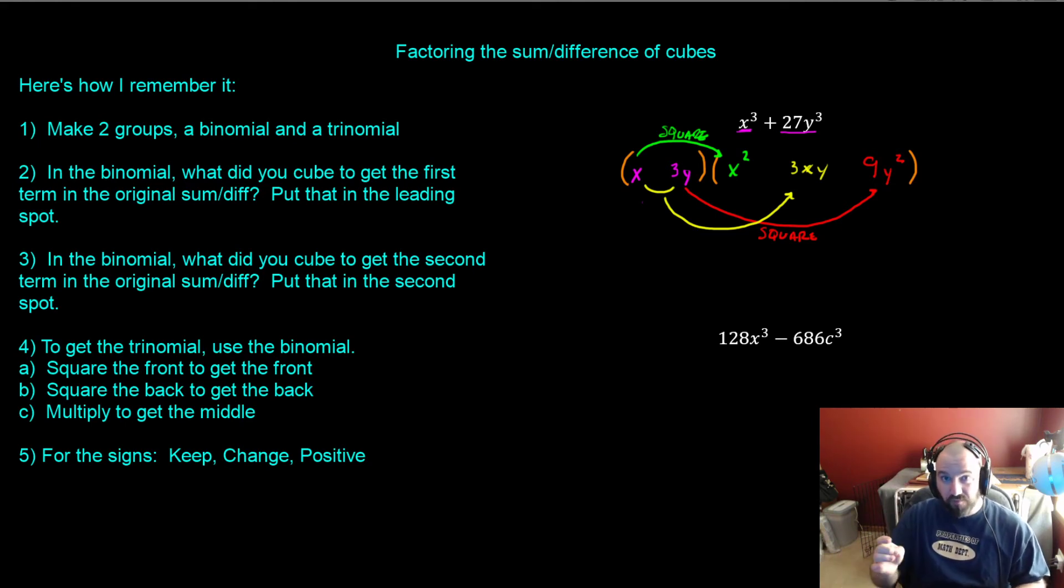So it's square the front to get the front, square the back to get the back, multiply to get the middle. And it's just kind of a da-da-da-da-da-da. And it's just stupid, so you remember it. I had to come up with something because it was a nightmare to have to just memorize. Now finally, the signs. I always leave the signs to last because I have a little ditty for that too. It's keep change positive. So everybody thinks that change is a bad thing, but it doesn't have to be. So keep change positive. And that also gives us our sign when we factor.